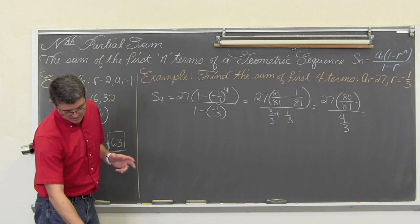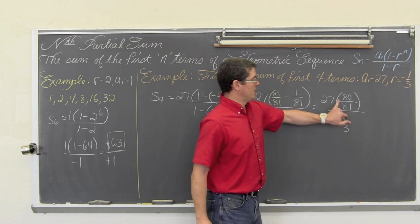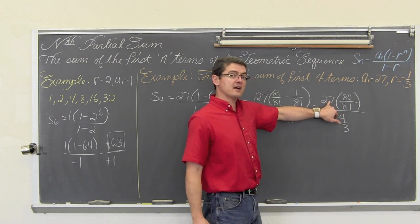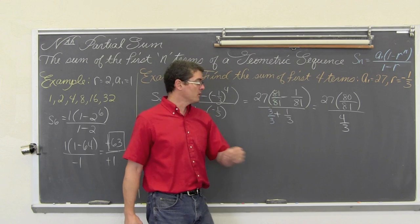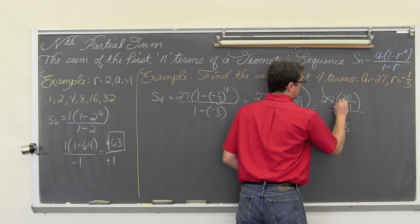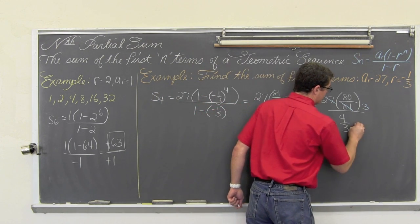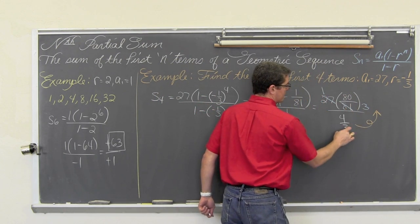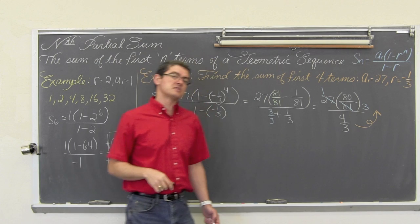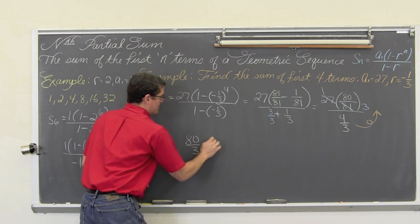I think we are going to have some cancellation here. Let's see if we can cancel right now. 27 and 81, how many 27s are in 81? 81 has a factor of 9 in it. 27 has a factor of 9 in it. 81 has a factor of 3 and so does 27. So basically 81 divided by 27 reduces down to be 1 third. So now we are going to take that 80 over 3.